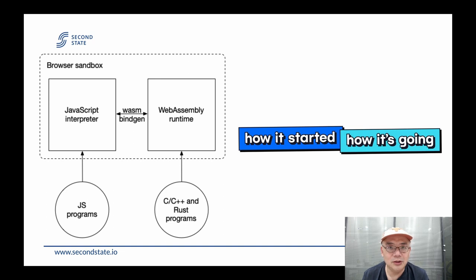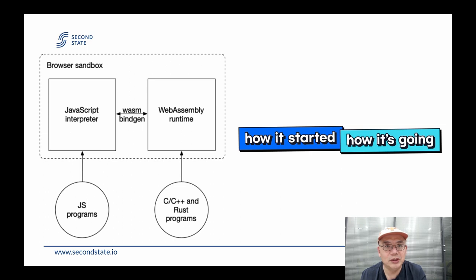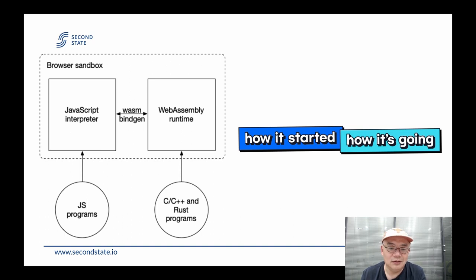WebAssembly was meant as a supplement to JavaScript. Inside the browser, the WebAssembly runtime runs side by side with JavaScript. You have a JavaScript runtime and a WebAssembly runtime with a bridge between them. The JavaScript runtime acts as a host for the WebAssembly runtime — the WebAssembly runtime handles computation, but networking, file system, and other data are provided by the JavaScript runtime through the bridge.